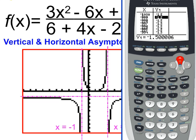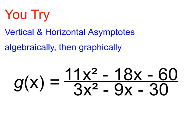So I hope that made sense. We've explored and verified this graphically after doing it algebraically. You know the drill — it's your turn to try. Find the vertical and horizontal asymptotes of this function. Do so algebraically first, then pick up your calculator and confirm and explore graphically. Pause the video at this point, because in just a moment I'm going to reveal the solutions.